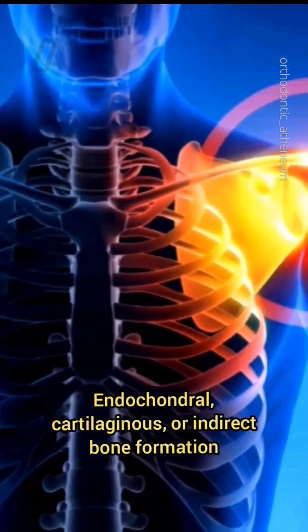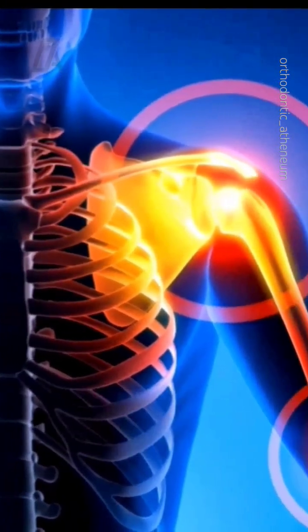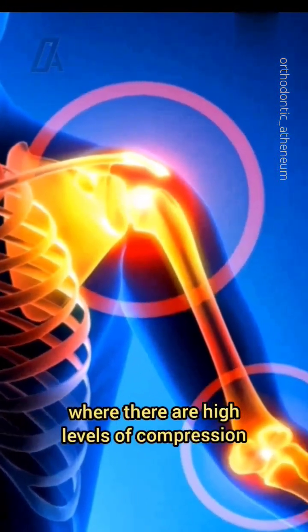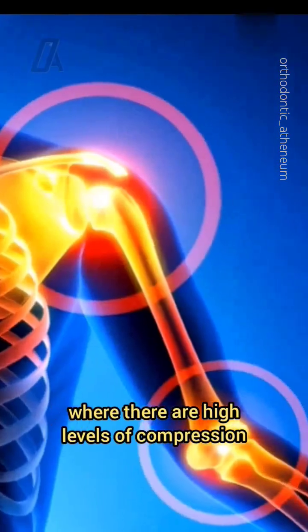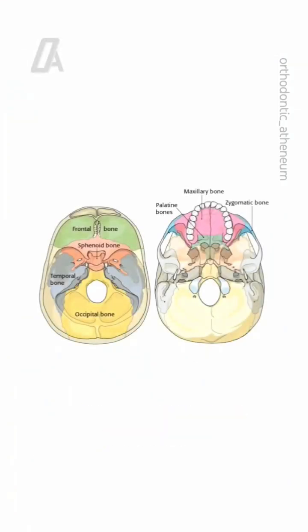Endochondral, cartilaginous, or indirect bone formation involves production of bone in areas where there are high levels of compression. Thus, it is seen in the cranial base and in movable joints.